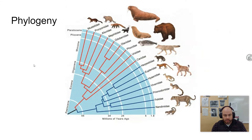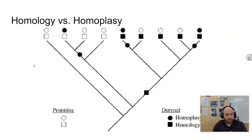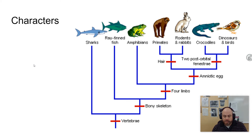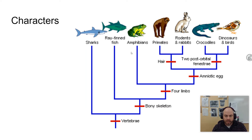Just a couple of words to note — let's talk about characters first. A character is just a phenotypic component used to evaluate phylogenetic relationships. It could be something simple like having a vertebra, a bony skeleton, or four limbs. These are all phenotypic components, things that you can see when you look at the organism. They are apparent, so it's an easy way to classify them and to see how those things have changed over time.